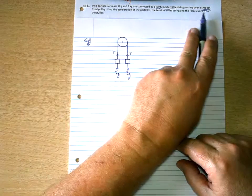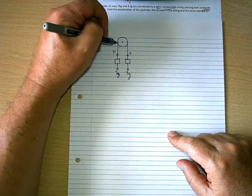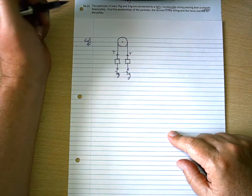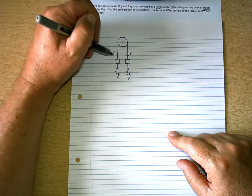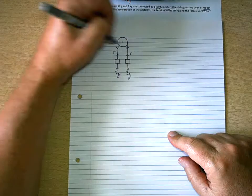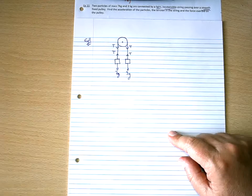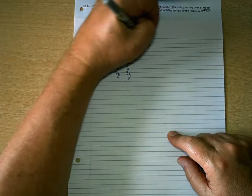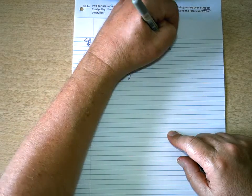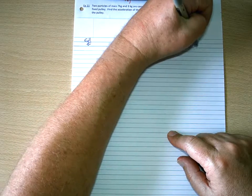Now because the pulley is smooth, it means there are no frictional forces on the string as it moves around the pulley. And therefore, the tension, wherever you are on the string, remains the same. So, wherever you are on that string, you're going to have equal and opposite tensions working against each other. So, the word smooth, with a pulley, allows us equal tension.